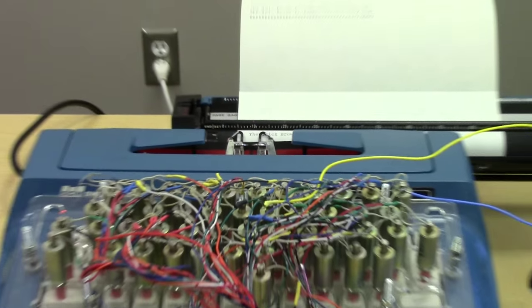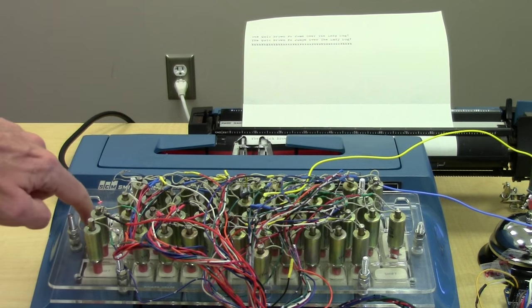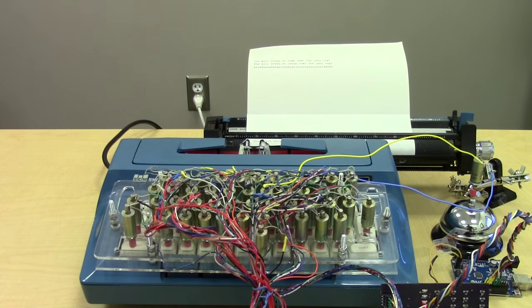Welcome to my Smith Corona typewriter to printer hack. What I've got here is a Smith Corona Sterling Automatic 12 1960s vintage typewriter. It's actually a beautiful typewriter. I actually kind of like the weird blue color scheme.